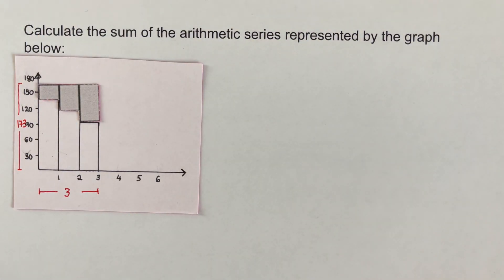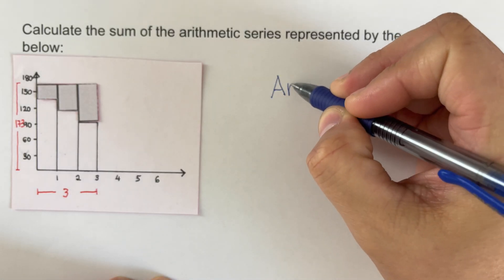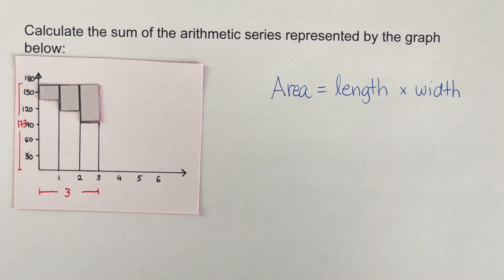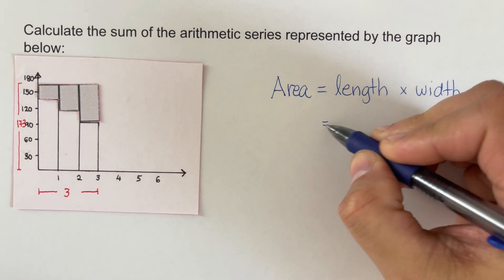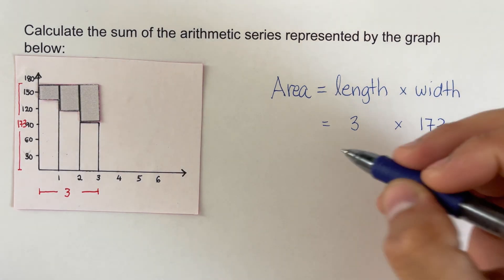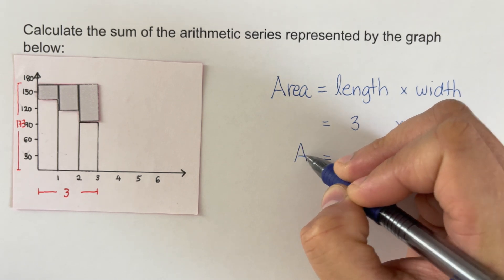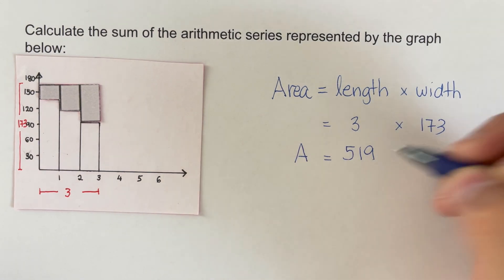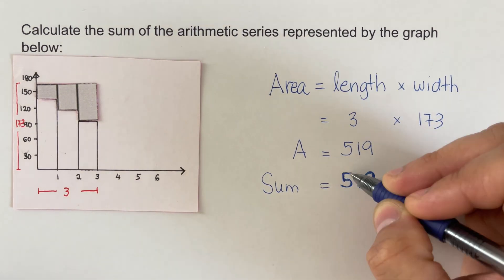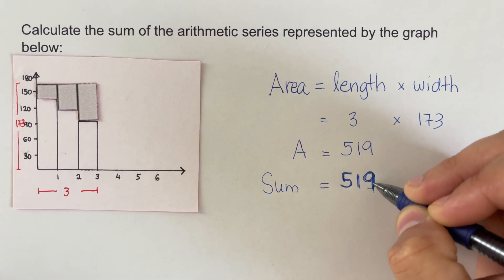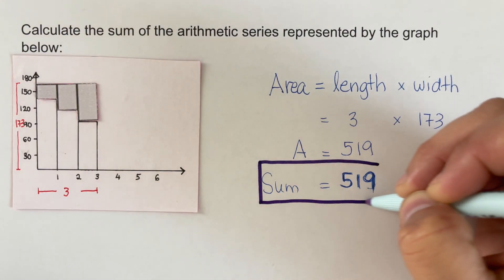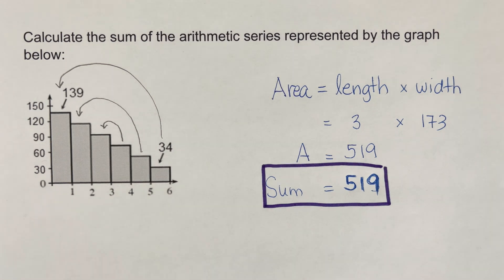Using the area formula, we plug in length 3 times width 173, and 3 times 173 equals 519. Since the area represents the sum of the arithmetic series, the sum is 519. This is the sum of the series represented by the given graph.